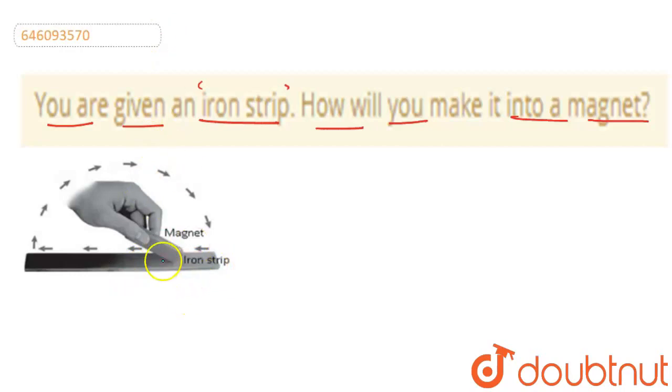First of all, we have a magnet. Okay? So, there are only two poles.